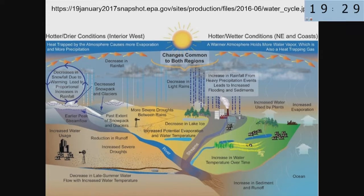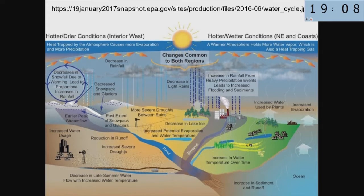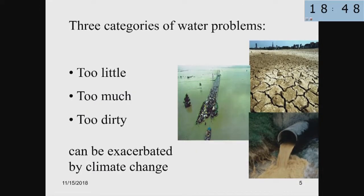This is a very busy slide from the U.S. EPA. Warming means higher water temperature, means shrinking cryosphere — that is melting glaciers and less snow cover — but also changes in precipitation: less solid, more liquid precipitation, and more intense precipitation events at the cost of drizzles. There are three categories of water problems: having too little, too much, and too dirty water. All three can be exacerbated by climate change.